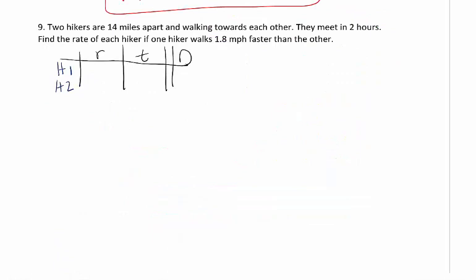Looking at our last one, number 9. We have two hikers 14 miles apart and they're walking towards each other. I want you to realize this is still a total distance problem - we have the total distance in the beginning and we're saying how long does it take for them to reach each other. So they meet in 2 hours, so that's the same amount of time for both of them. Find the rate of each hiker if one of them walks 1.8 miles per hour faster than the other. So we have x and x plus 1.8.